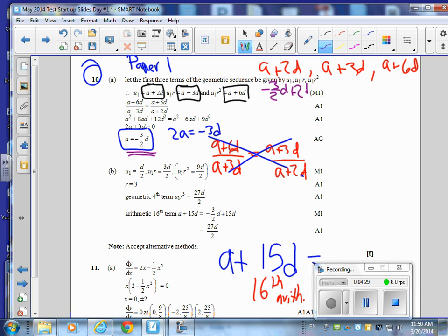Plus 2D. Negative 3 halves D plus 3D. Negative 3 halves D plus 6D. Get common denominators here. This is going to be 4 over 2, 6 over 2, 12 over 2.